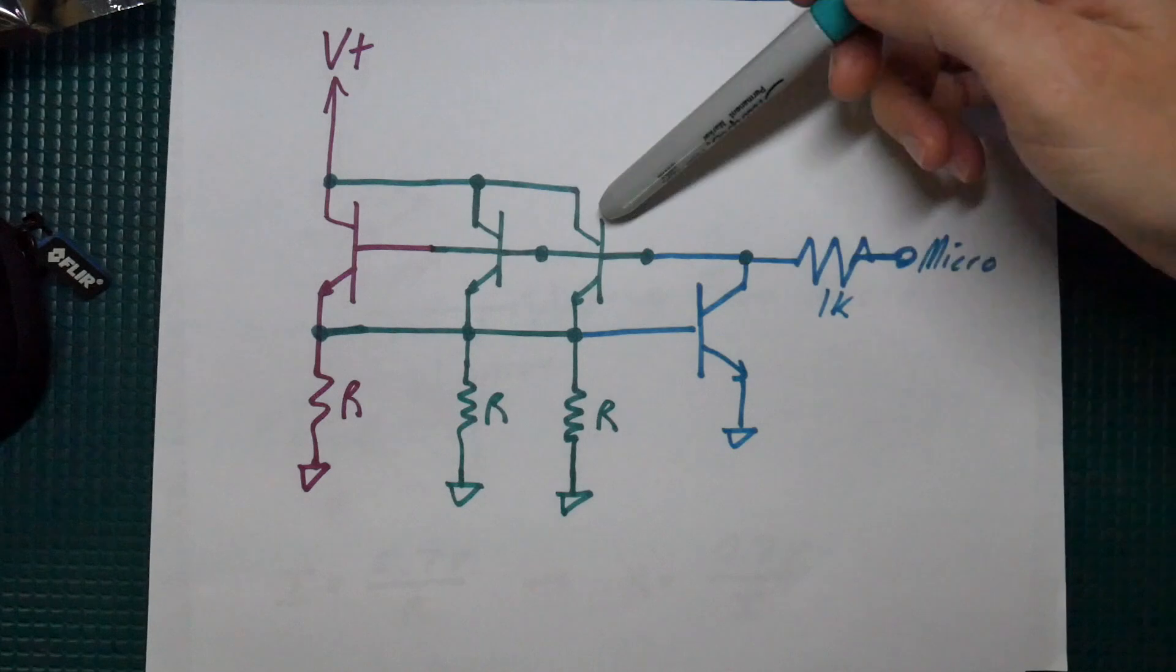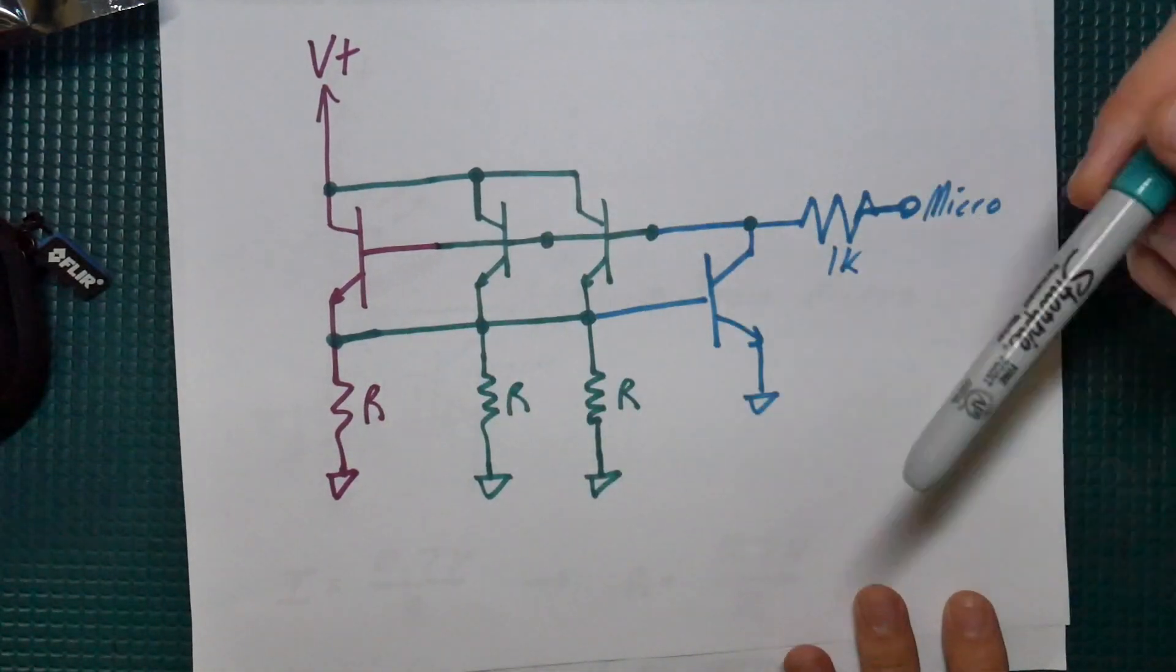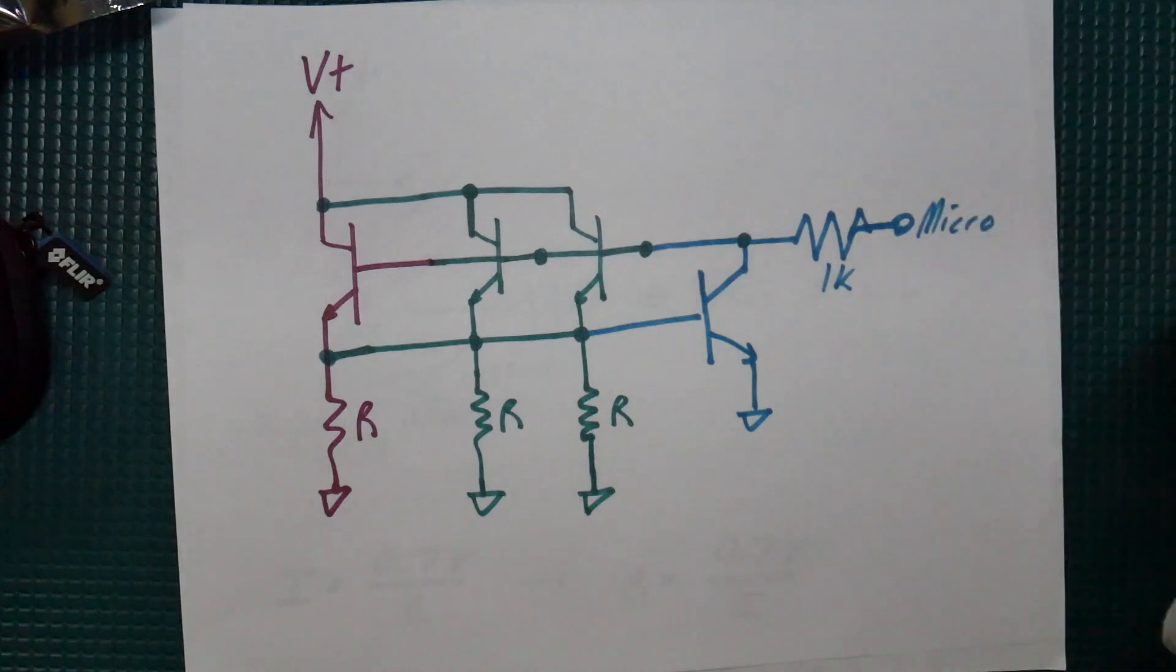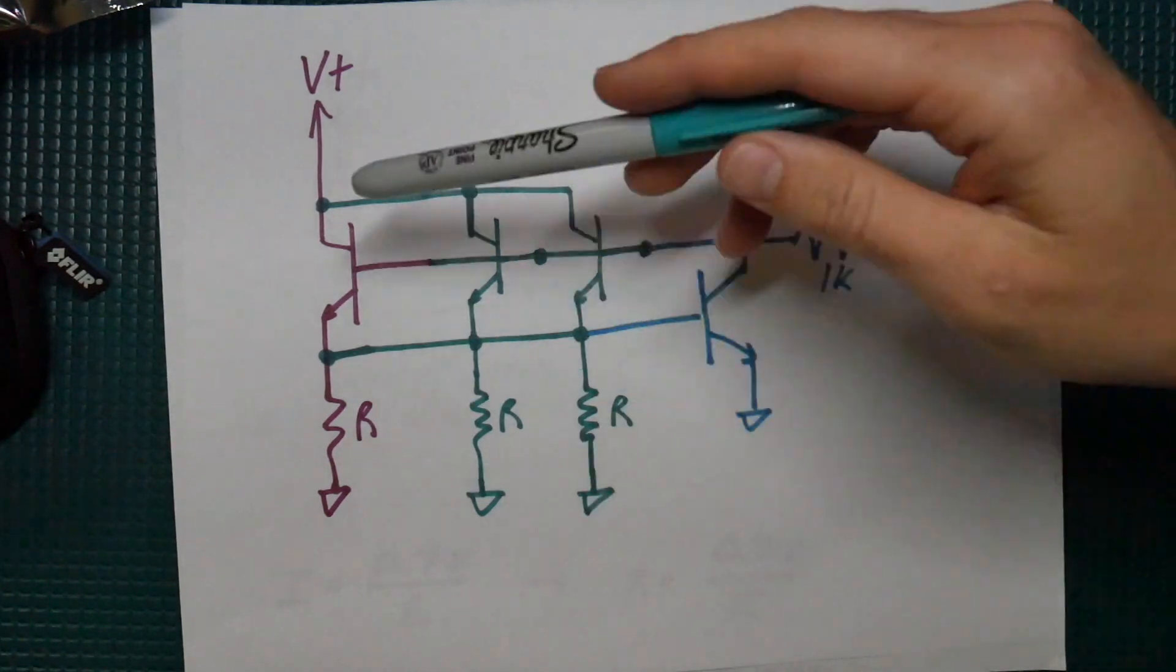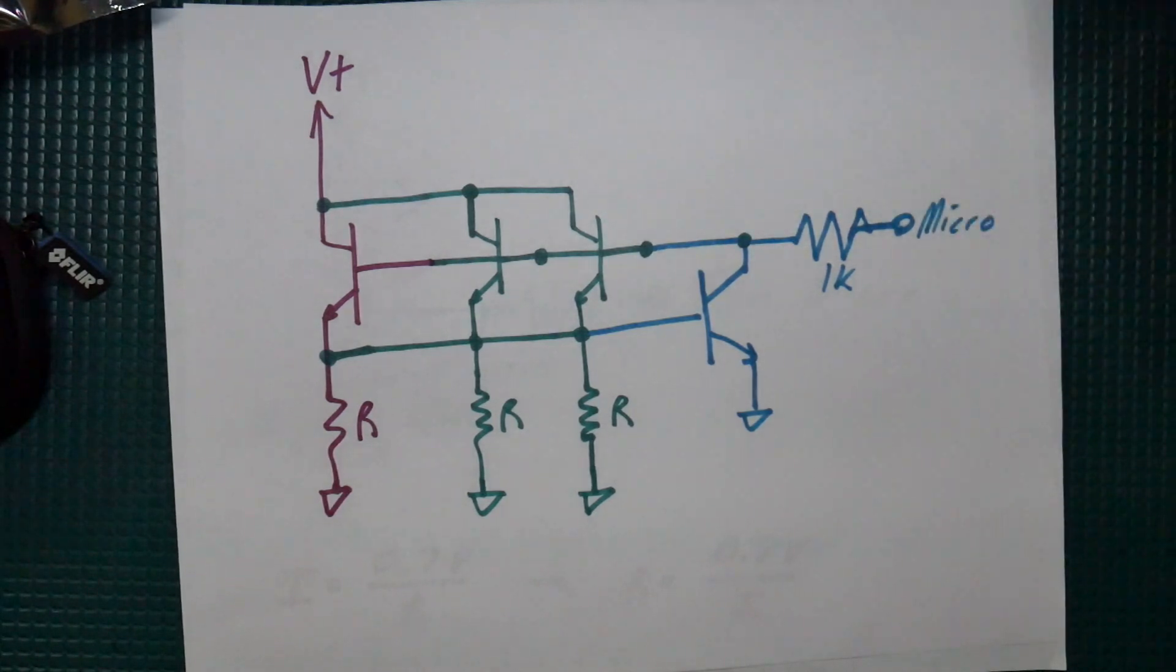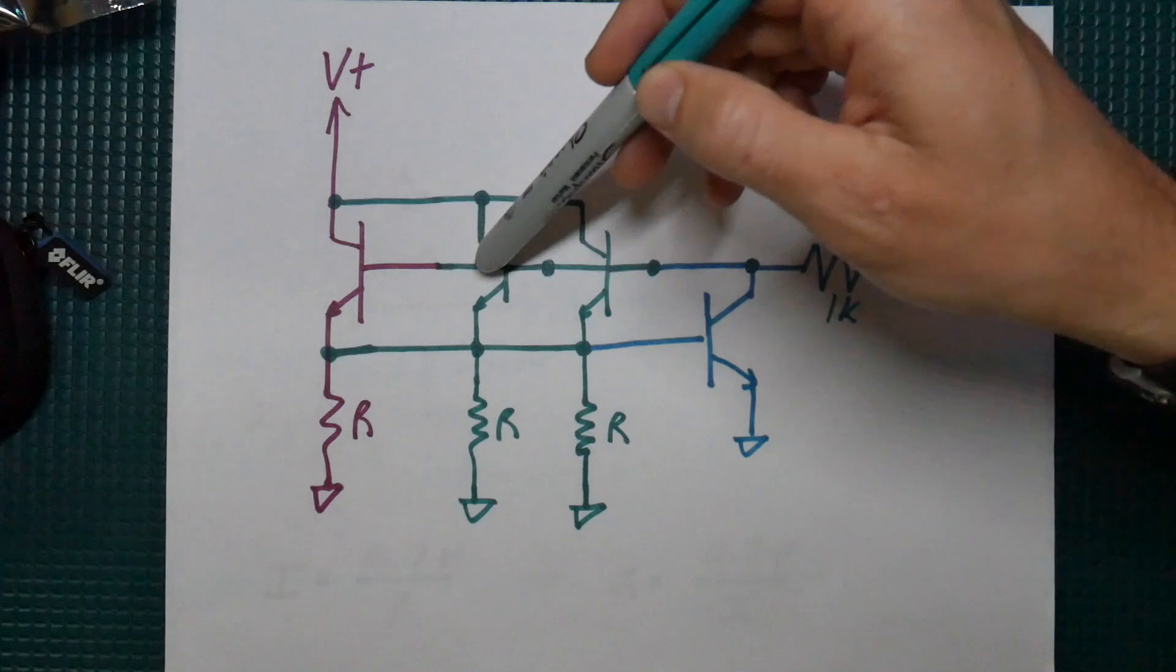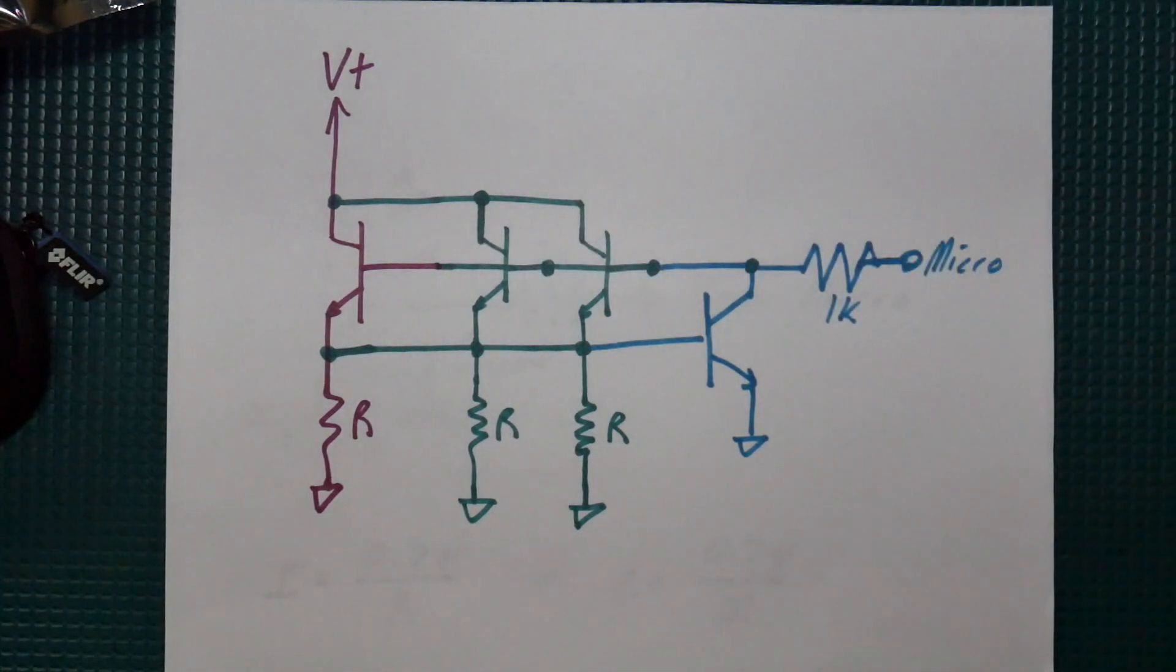So maybe what you're thinking is why not just parallel up all of those transistors? All of the bases, collectors, and emitters all tied together and then just add more resistors in parallel. Now theoretically that works. In fact I think if you threw this into some simulation software you'll actually see that this works fine. It's all of the loads are shared. But let's actually build this up and I'll show you what happens.